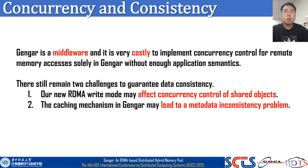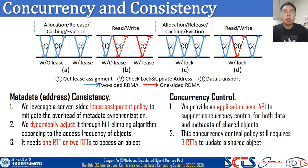Gengar is a middleware, and it is very costly to implement concurrency control for remote memory access solely in Gengar without enough application semantics. Two challenges remain: first, our new RDMA write mode may affect the concurrency control of shared objects; second, the cache mechanism in Gengar may lead to metadata inconsistency problems. In Gengar, we leverage a software-side lease-assignment policy to mitigate overhead of metadata synchronization, and dynamically adjust it through a hill-climbing algorithm according to access frequency of objects. Gengar sets a short lease for objects in NVM to fetch them to the DRAM buffer earlier, and a long lease for objects in DRAM to avoid excessive lease reassignment. Gengar also provides an application-level API to support concurrency control for both data and metadata of shared objects.